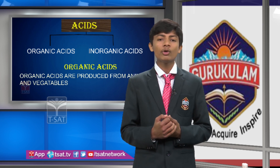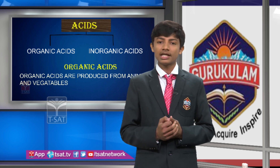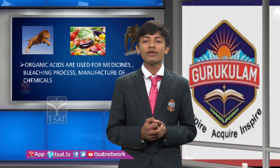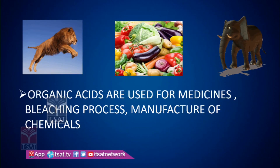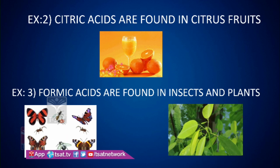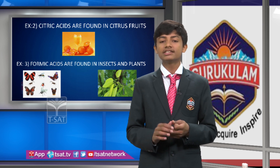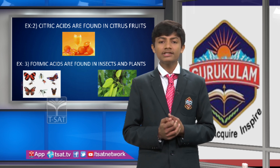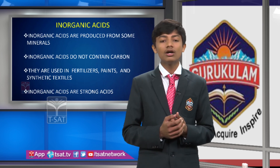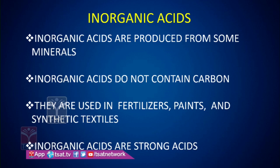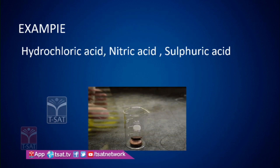Organic acids are produced from animals and plants. They are useful for the manufacture of chemicals and medicine. Organic acids are very weak acids — for example, citric acid, formic acid, and acetic acid. Inorganic acids are produced from minerals, do not contain carbon, and are useful for fertilizers, paints, and manufacture of synthetic textiles. Inorganic acids are strong acids — for example, sulfuric acid, hydrochloric acid, and nitric acid.